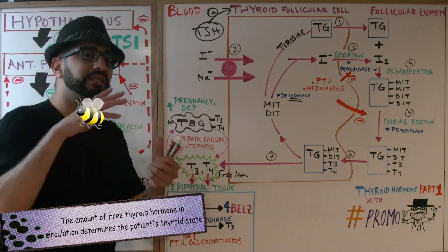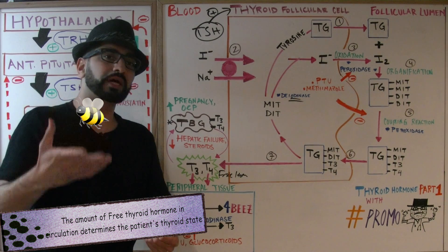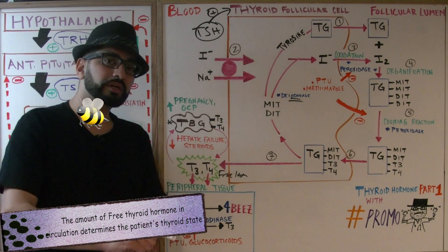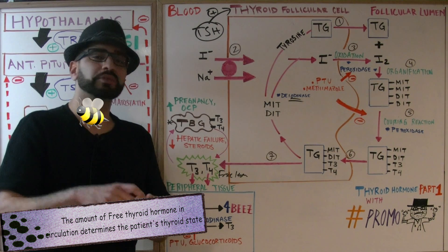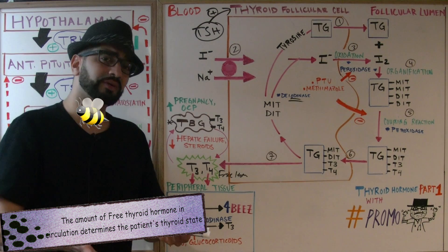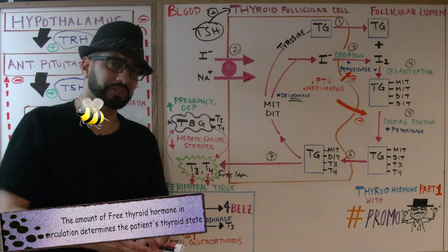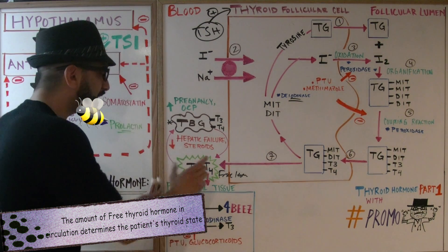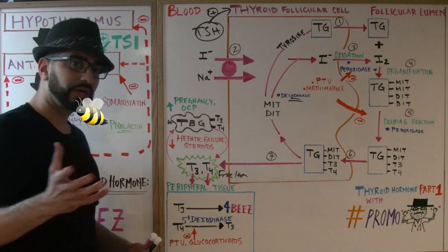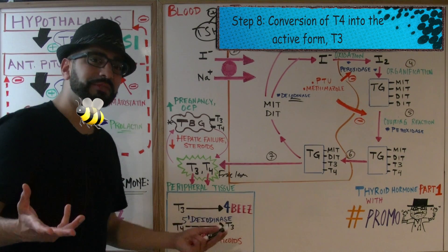What we're measuring is the free hormone — the amount of free hormone in the blood tells us if the patient has normal thyroid function (euthyroid), too much thyroid function (hyperthyroidism), or too little thyroid hormone (hypothyroidism). So that's what we're measuring: the free hormone concentration.